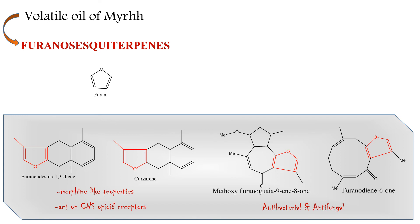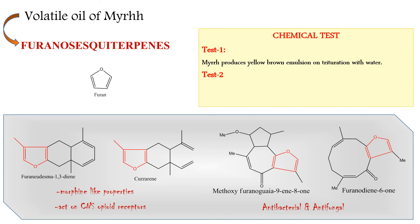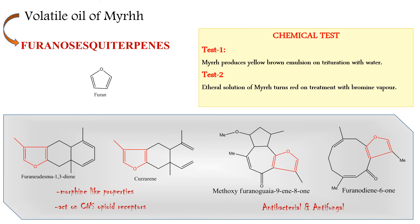Myrrh is an unorganized drug, so chemical tests become important. Test 1: Myrrh produces a yellow-brown emulsion on trituration with water. Test 2: The ethereal solution of Myrrh turns red on treatment with bromine water, and the solution becomes purple with nitric acid.